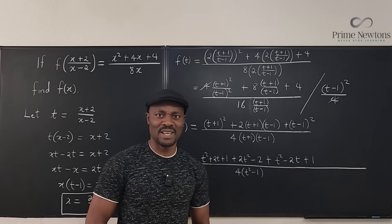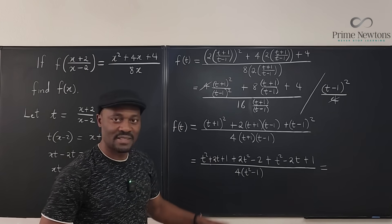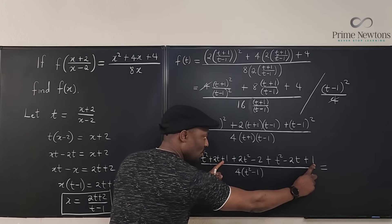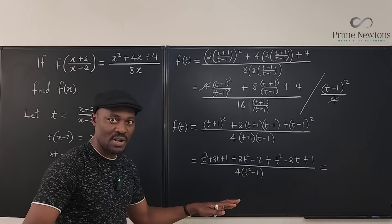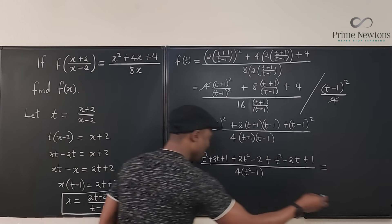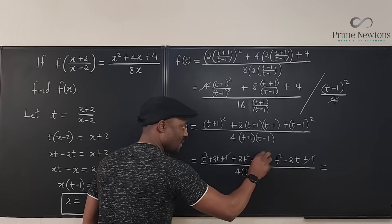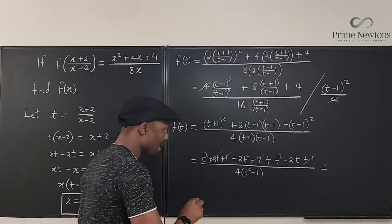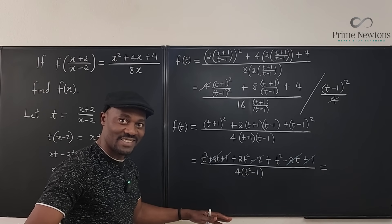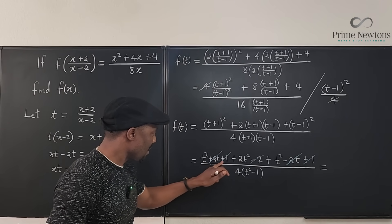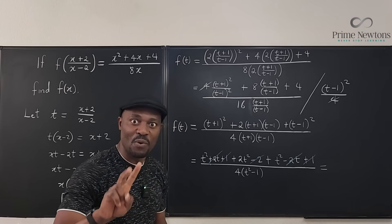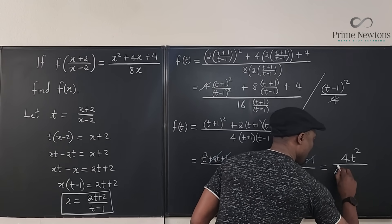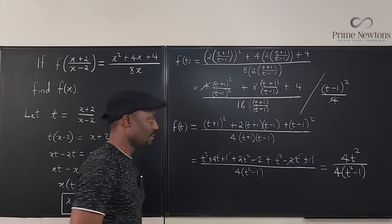What can we do here? I know that 1 plus 1 minus 2 is 0, so all the numbers are gone. I know that 2t minus 2t is gone. Now I have t squared plus 2t squared plus t squared, I got 4t squared. So this is 4t squared over what's in the bottom, 4 into t squared minus 1. That's f of t.